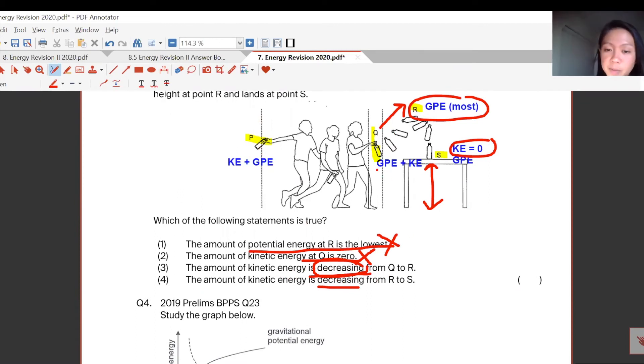Natalie is right because here is GPE and KE. Then it goes up. Something must have converted to more GPE. If something converted to more GPE, that means your KE will drop. It's still moving upwards but you will slow down, slow down, slow down to the top. A lot of GPE.